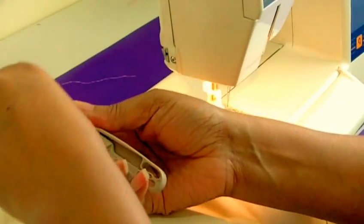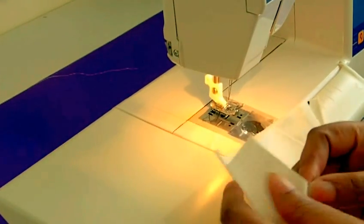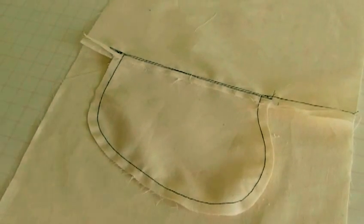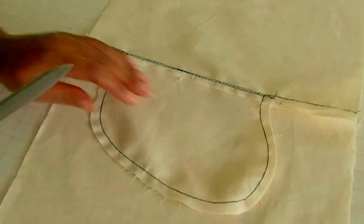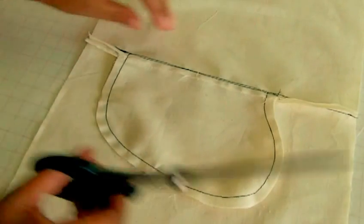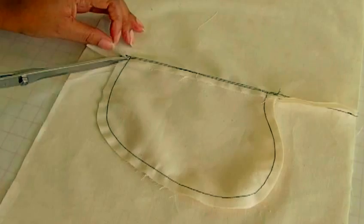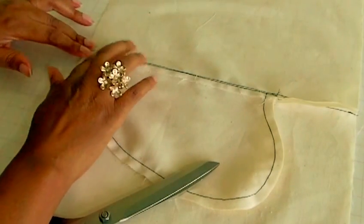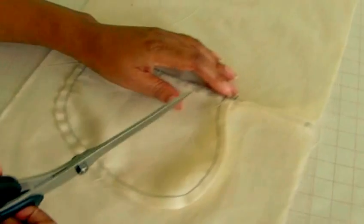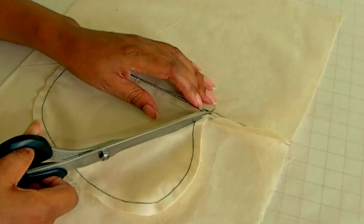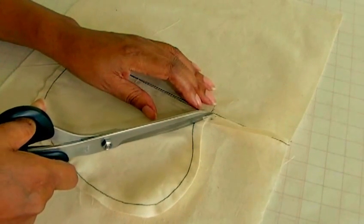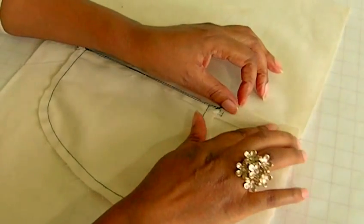Trim my threads, and there you have your in-seam pocket. I'm working with a plain seam, so in order to get the seam to lie correctly before you iron, just clip close to the stitching.